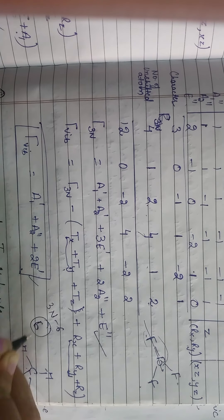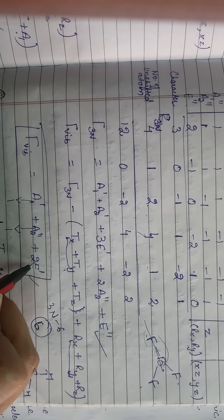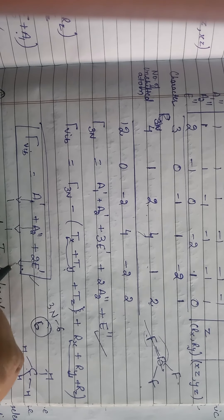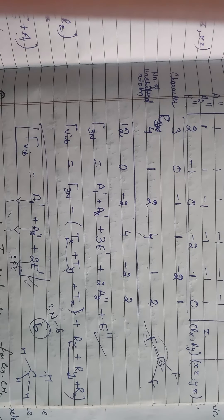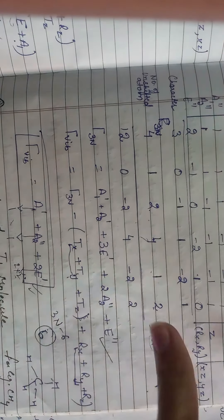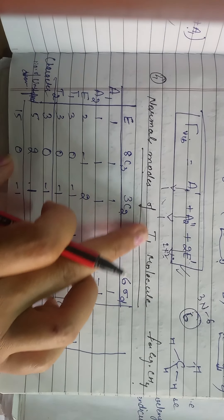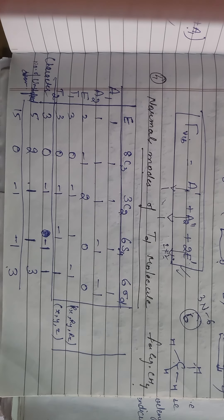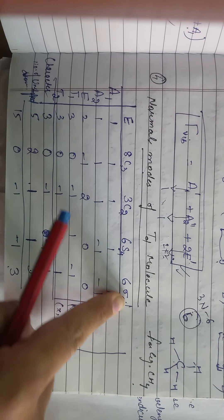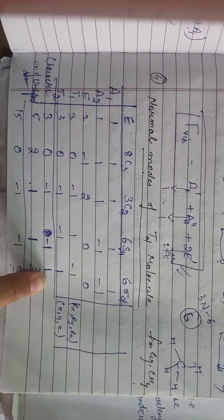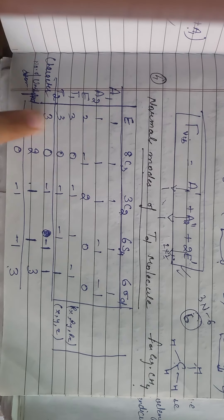Next hai BF3 ka molecule. Main aapko fir se bata raha hoon: C2V aur C3V ke alawa agar character table aata hai to vo aapko diya jayega. Zyada tar UGC ke exam mein jab group theory ke normal modes pooche jaate hain to higher order ke liye character table provided hota hai. But MSE ki baat karo to MSE mein aapke syllabus mein jo normal modes hain vo C2V aur C3V ki hain.